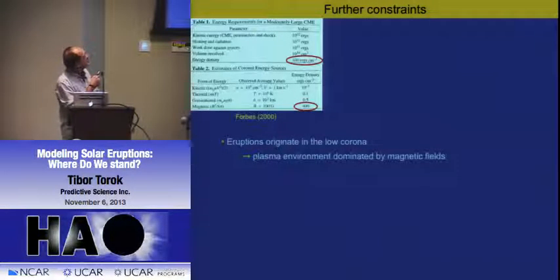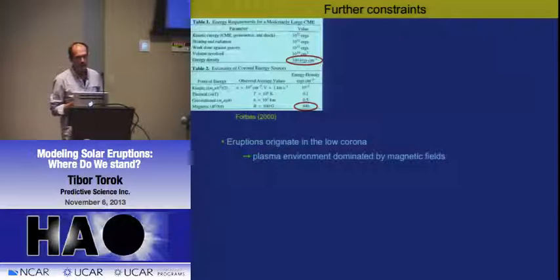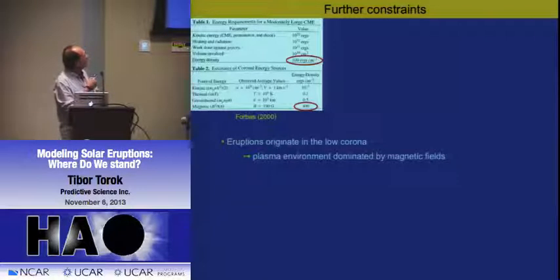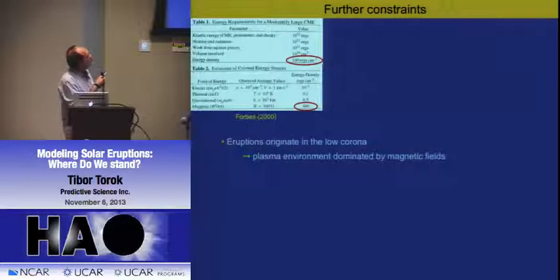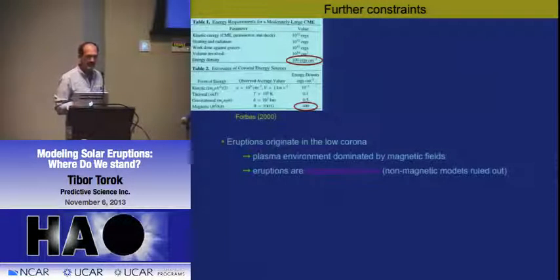These are estimations of the energy you need for a relatively large CME. If you do these estimations, you end up at something like 100 ergs per cubic centimeter. This is the energy you need to account for the kinetic energy of the CME and what you have during the flare. If you make estimations of the energies available, you see that it's only the magnetic energy that can provide this kind of number. Everything else—kinetic energy, thermal, gravitational—is way too small. So we conclude that eruptions are really magnetically driven.